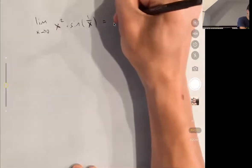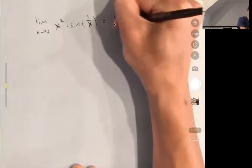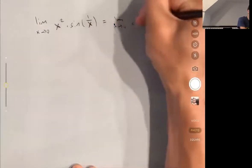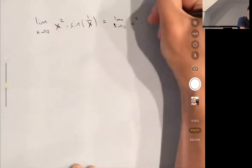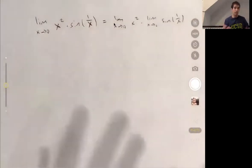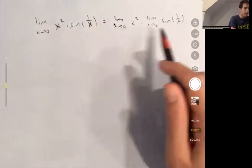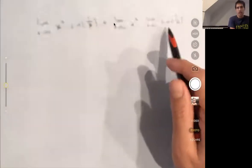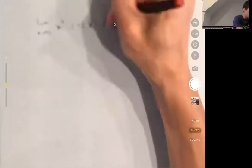So the first thing that I could try is to split this limit up. It's a product of two functions, so I could try to write it as the limit of x squared times the limit of sine 1 over x. And if both of these limits existed, then we could multiply them together and that would be the limit. So the first limit is 0, but unfortunately, the second limit doesn't exist. So we can't use this technique. So that's not going to work.